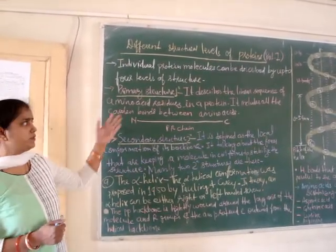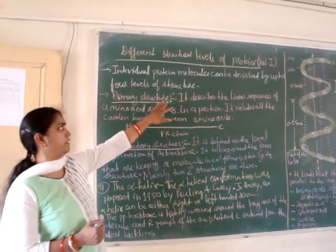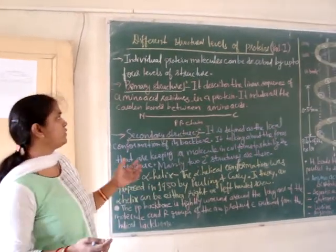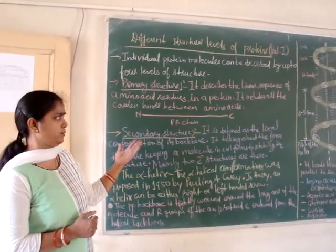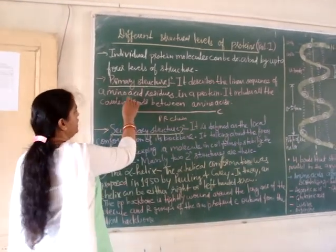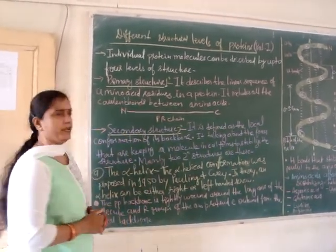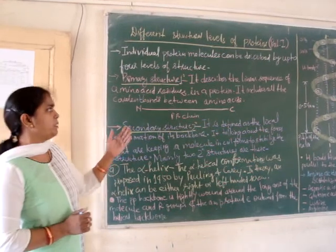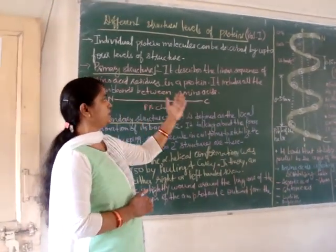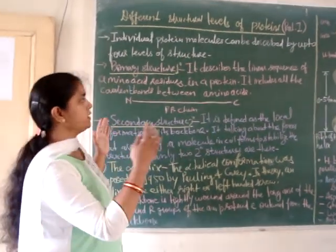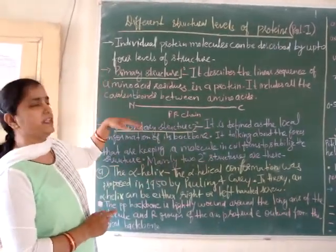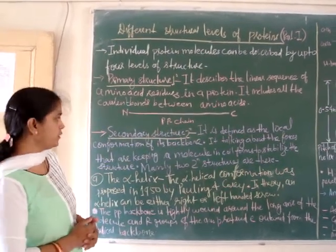First we will see the primary structure of protein, also designated as 1°. It describes the linear sequence of amino acid residues in a protein and includes all the covalent bonds between amino acids. The amino acids present from the N-terminus of a polypeptide chain to the C-terminus, linked with peptide bonds, represent the primary structure of proteins.